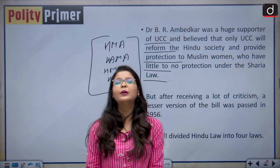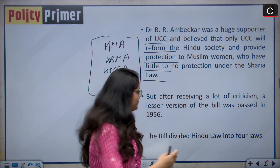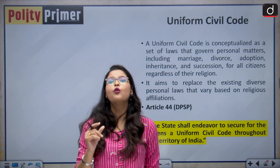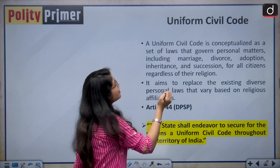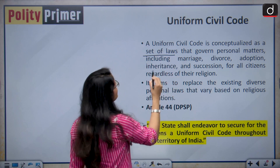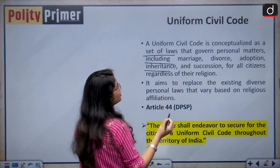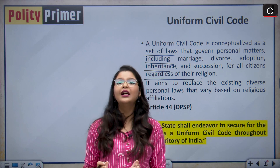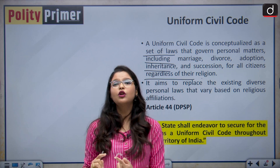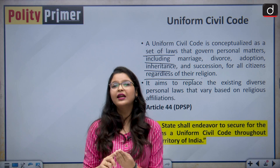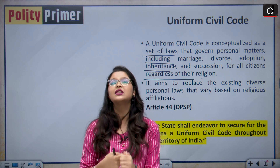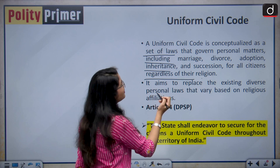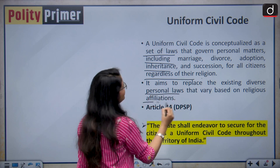Let us understand what we mean by this term UCC. In simple terms, the Uniform Civil Code means one law for one nation. The Uniform Civil Code is conceptualized as a set of laws that govern personal matters including marriage, divorce, adoption, inheritance and succession for all citizens regardless of their religion. Personal laws have a huge impact on our day-to-day life because they govern us on important matters such as marriage, divorce, inheritance, succession, adoption, and guardianship.